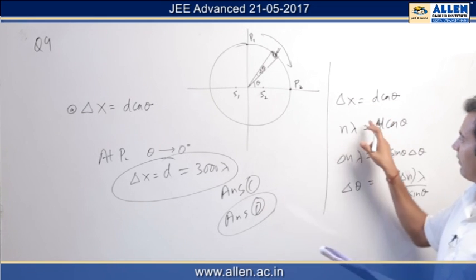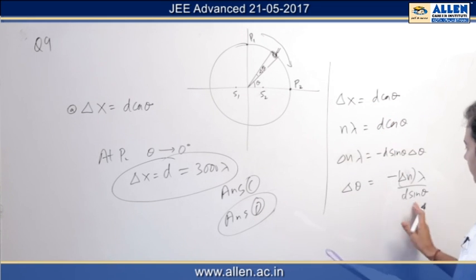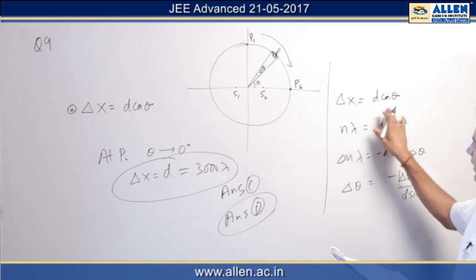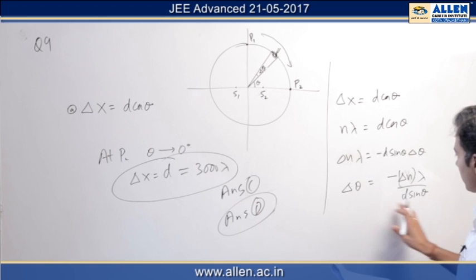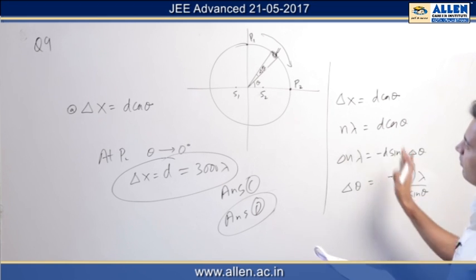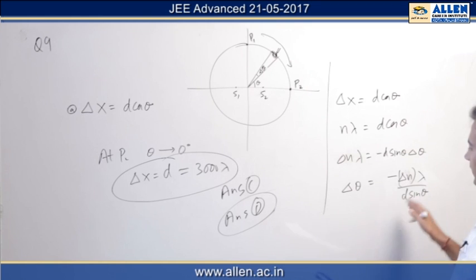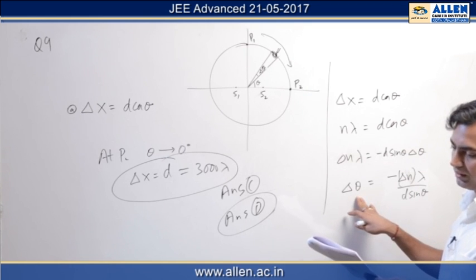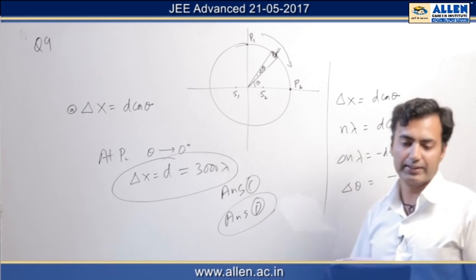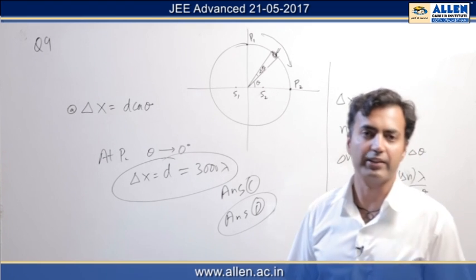For option B, we will have to see how delta theta varies with theta. You write the standard equation for path difference for the given problem, differentiate it, this is what you have. On varying theta from 90 to 0 as the question says, you will find that delta theta increases instead of being decreased as it is suggested, so b would not be an answer.